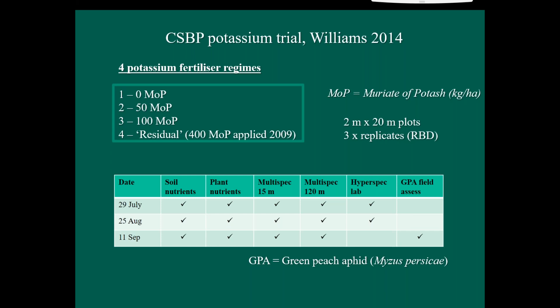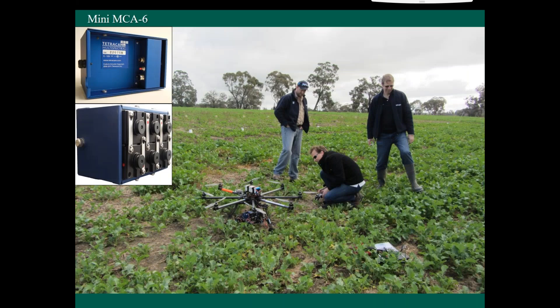So we did a number of soil and plant nutrient analyses to really ground truth what was going on. And then I flew a multispectral camera at 15 meters and 120 meters. 120 meters is the legal height that we can fly in Australia. And then we'll have a look at some of what happened in the hyperspectral imagery as well.